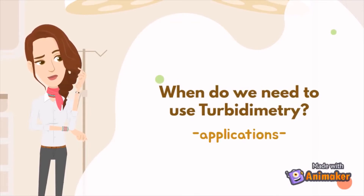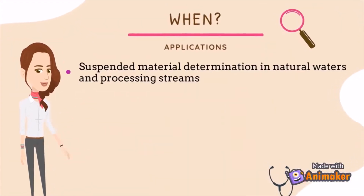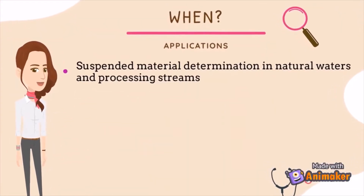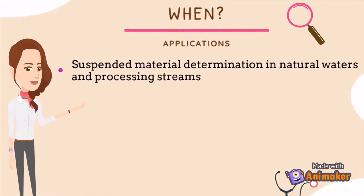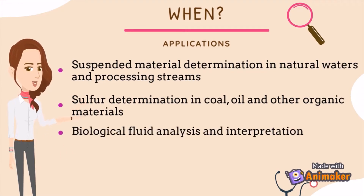The applications of Turbidimetry: the first is when suspended material determination in natural waters and processing streams is required. The second is for sulfur determination in coal, oil, and other organic materials by precipitating sulfur as barium sulfate. The third is for biological fluid analysis and interpretation,